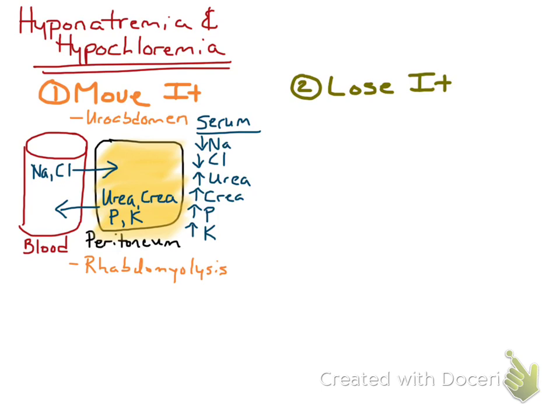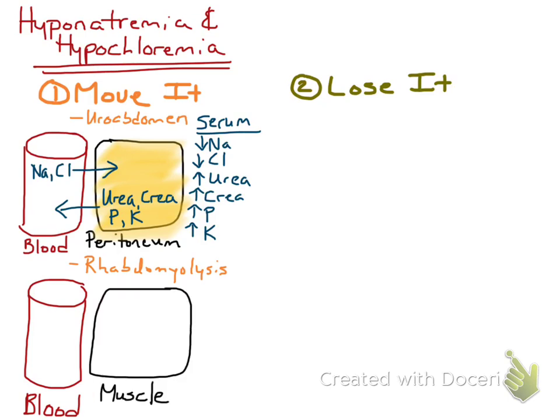Now moving on to rhabdomyolysis. Rhabdomyolysis is lysis of muscle — not just one myocyte, but lots and lots of myocytes. This is severe muscle injury and muscle cell death. I'm going to draw a blood vessel on the left, and this time I'm going to draw a muscle cell, again represented by a black square.